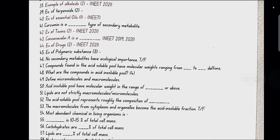No secondary metabolites have ecological importance. No, this is false. Compounds found in acid soluble pool have molecular weights ranging from 18 to 800 daltons. What are the compounds in acid insoluble pool? Proteins, nucleic acids, polysaccharides and lipids. Micromolecules are less than 1000 daltons and macromolecules are found in acid insoluble pool.